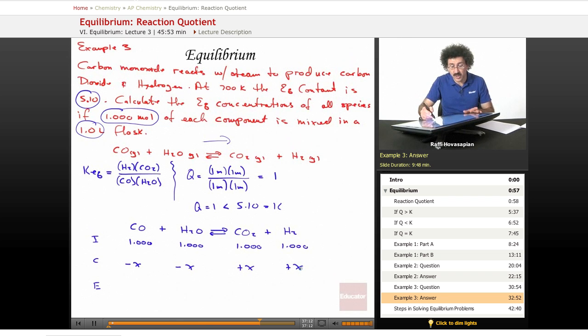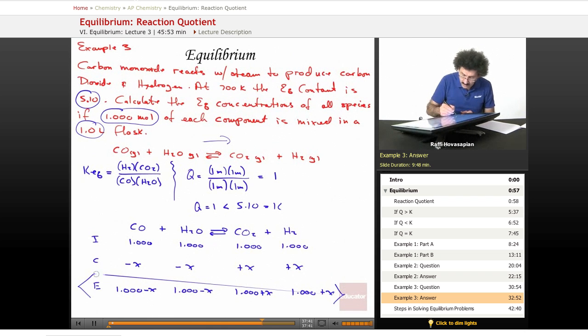So our equilibrium concentration, at equilibrium, once everything has stopped, a certain amount of CO has been used up. So our equilibrium concentration is going to be 1.00 minus X. A certain amount of H2O has been used up. That's 1.000 minus X. A certain amount of CO2 is formed. So it's going to be 1 plus X. And a certain amount of H2 is formed. 1 plus X. These are our equilibrium.